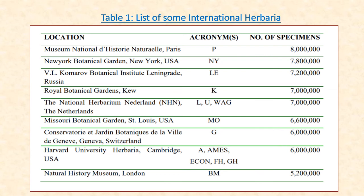Table 1 gives information on a list of some international herbaria, including their location, acronyms used, and number of specimens deposited. The herbaria listed are: National Herbarium, Paris; New York Botanical Garden, New York; Komarov Institute, Leningrad; Royal Botanical Garden, Kew; National Herbarium, Netherlands; Missouri Botanical Garden, St. Louis; Botanical Garden, Geneva; Harvard University Herbaria; and Natural History Museum, London.